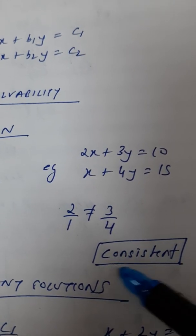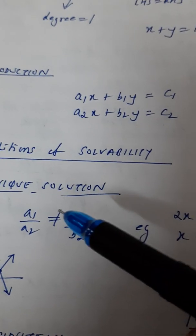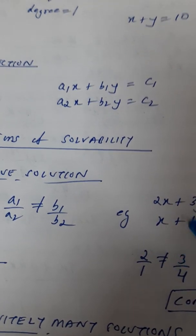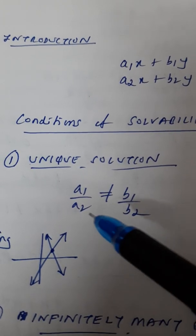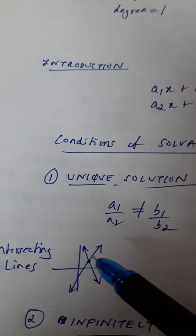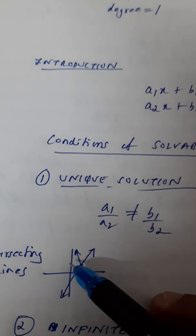Consistent means it is having a solution, a unique solution. And if I try to plot this on a graph, what will happen? You will get two intersecting lines. This will be two intersecting lines. And the point of intersection will give us the unique solution, the answer.